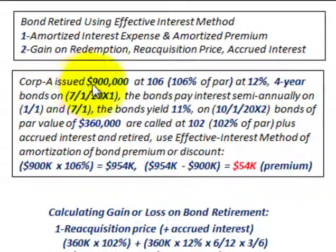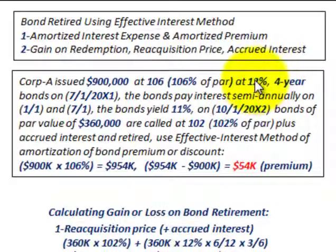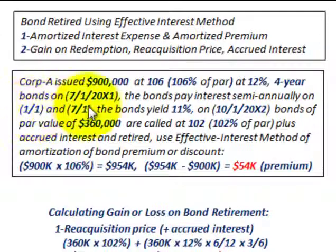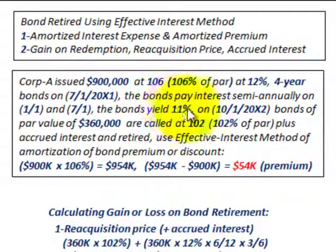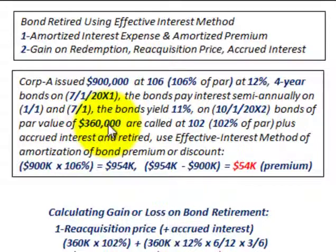For example, Corporation A issued $900,000 worth of bonds at 106, or 106% of par, at a 12% stated interest rate per year. They're four-year bonds issued on 7-1-20X1, and the bonds pay semi-annually on 1-1 and 7-1 each year. The bonds were issued to yield 11%, because they're issued at a premium. And on 10-1-20X2, bonds with a par value of $360,000 are called at 102, or 102% of par, plus any accrued interest, and they're going to be retired.